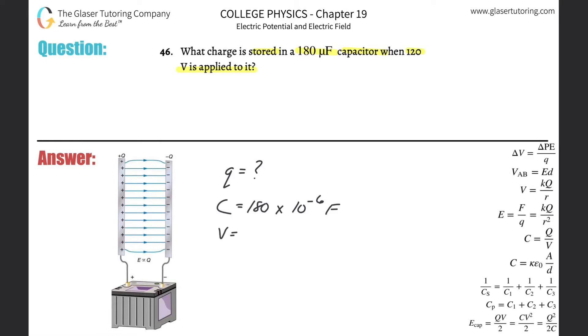And then the voltage that's applied is going to be 120 volts. I need to know a formula that relates these variables together. And we have a formula on the right-hand side that fits the bill: that the capacitance is going to be equal to the charge that's applied across the plates, divided then by the voltage applied to the plates, or the voltage difference between the two plates.